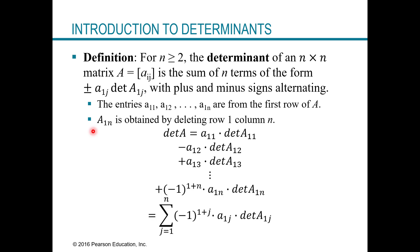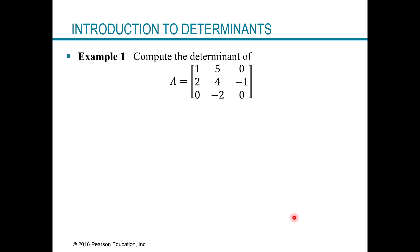For a three by three, we break this down into little two by twos. The formula written out is: start with the entry in row one, column one times the determinant from deleting row one and column one, then alternate signs — minus the entry in row one, column two times the determinant from deleting row one, column two — and so on. The negative one to the power one plus J captures the alternating signs.